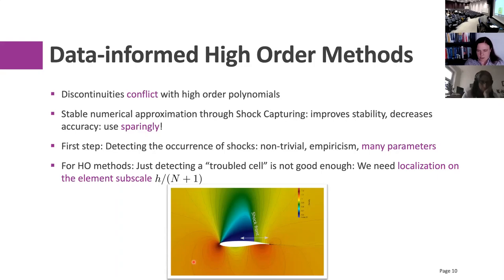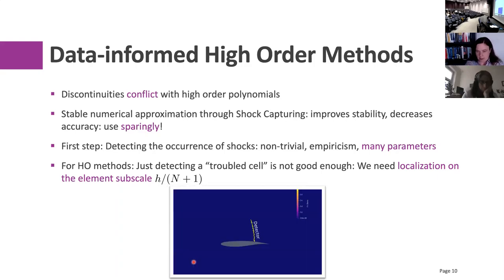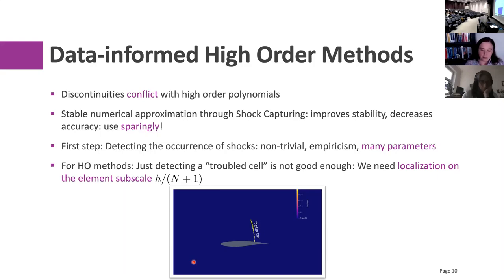To do shock capturing, you first need to find out where your shock is in your grid. You want shock capturing to be applied only where the shock is, not anywhere else, because it will destroy the nice approximation properties of the rest of your scheme. People do this with so-called troubled cell indicators or shock detectors — usually empirical methods. You have a shock detector, tune one or two parameters, run a simulation, it crashes, retune, and repeat until you reach a stable solution.